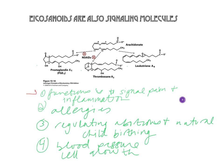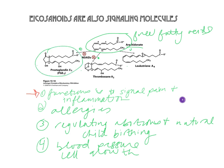The substrates for eicosanoids are free fatty acids, and most of them are arachidonate. When the enzyme converts them to eicosanoids — particularly prostaglandins and thromboxanes — it can signal pain and inflammation. These are actually the molecular targets for NSAIDs, or non-steroidal anti-inflammatory drugs, which have been highly studied for structure-based drug design.